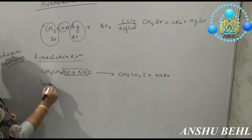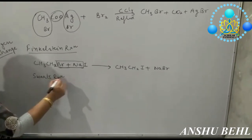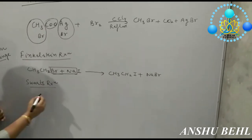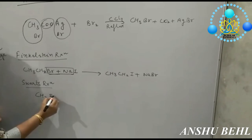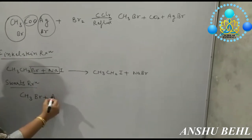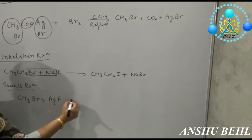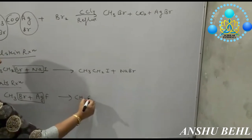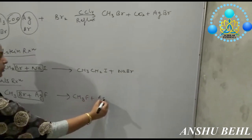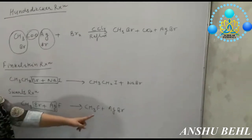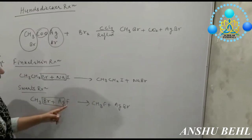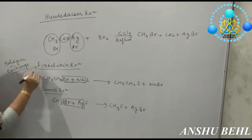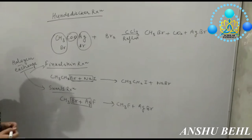Then you have the Swartz reaction, which is again a halogen exchange reaction in which you exchange your bromide with a fluoride group. You use silver fluoride; it will form AgBr and you get fluoromethane. If you want to get a fluoride group, this halogen exchange reaction can be used. Both Finkelstein and Swartz are halogen exchange reactions.